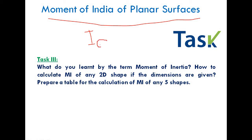Before we wind up, here is a small task: review the term moment of inertia, how to calculate it for any 2D shape — rectangular, square, circular, or others. Prepare a table for the moment of inertia Ig of any five shapes, drawing each shape and writing the corresponding formula. This will help with numericals in this section. In the coming lectures we will discuss submerged and floating three-dimensional bodies in a liquid. Thank you.